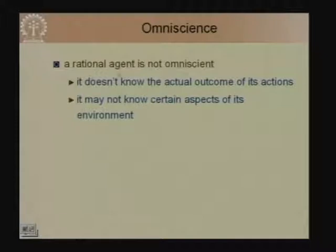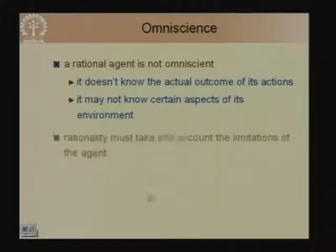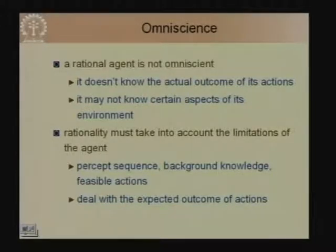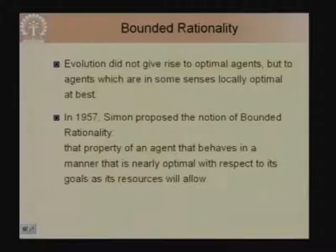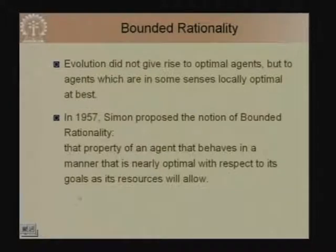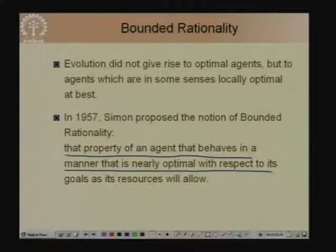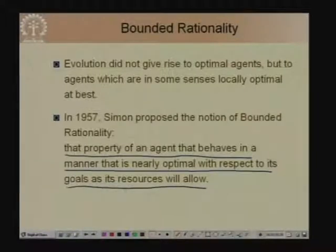A rational agent need not be omniscient because it does not know the actual outcome of its actions and certain aspects of the environment may be unknown. Rationality takes into account the limitations of the agent, the percept sequence it has access to, the background knowledge the agent has, the actions it can take, and we only deal with the expected outcome of actions. Formally, bounded rationality — as Herbert Simon proposed in 1957 — is that property of an agent that behaves in a manner nearly optimal with respect to its goal as its resources will allow.